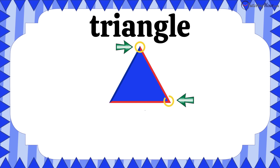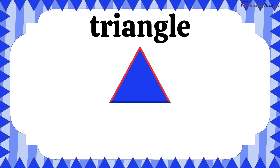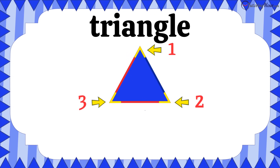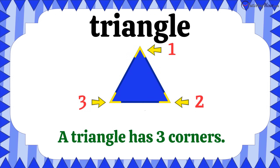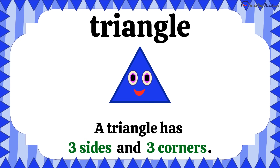The point where two sides meet is a corner. Let's see how many corners there are: one, two, and three — three corners! A triangle has three sides and three corners.